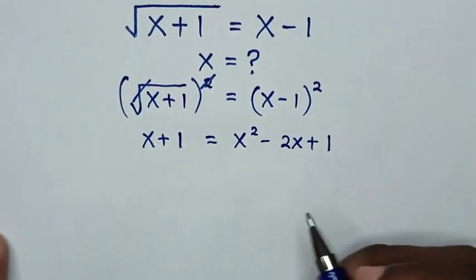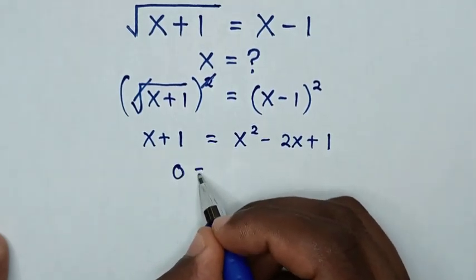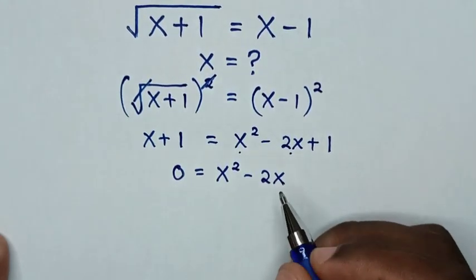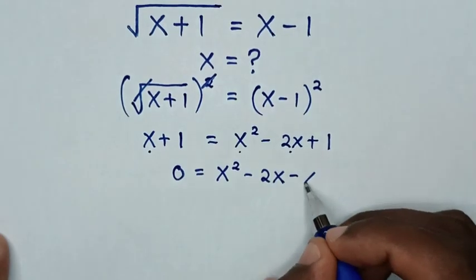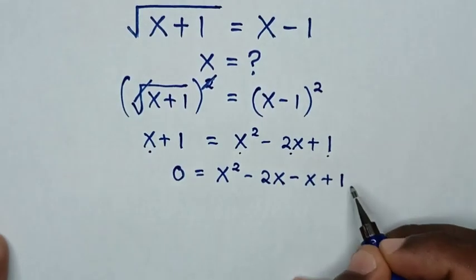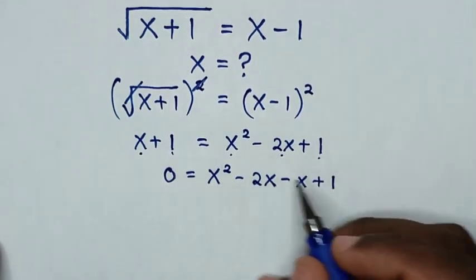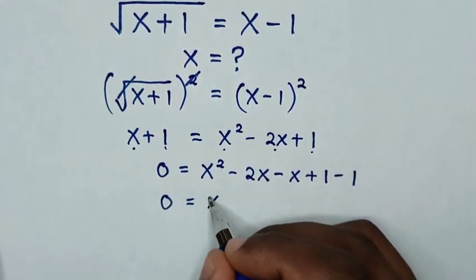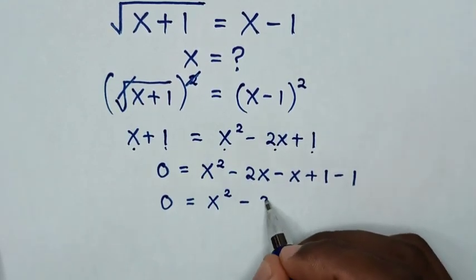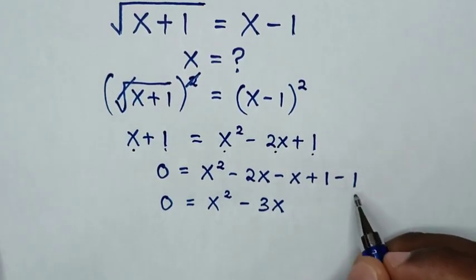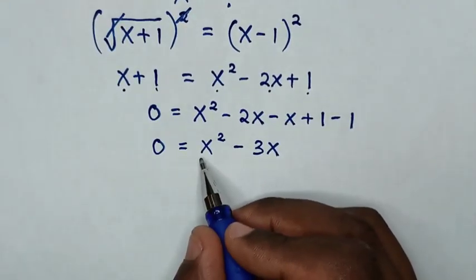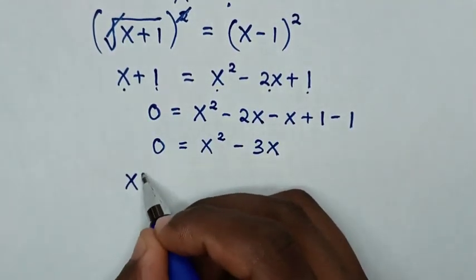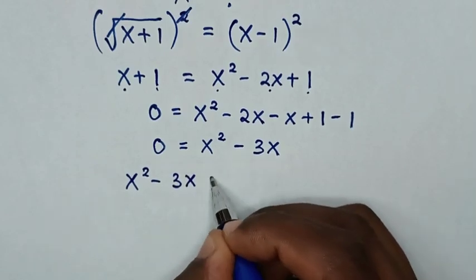Then in the next step we take x plus 1 to the right side. So it will be 0 equals x squared, then minus 2x, then minus x, then plus 1 minus 1. Combining like terms: 0 equals x squared minus 3x, since 1 minus 1 is 0. Taking x squared minus 3x to the left side gives x squared minus 3x equals 0.